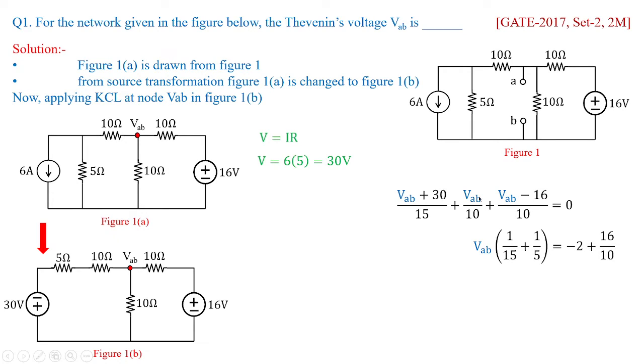On the right hand side 30 by 15 becomes minus 2 and this minus 16 by 10 on the opposite becomes 16 by 10. Now you take the proper LCM. So here on the left hand side 15 is the LCM and this cross multiply will give you the value as minus 4 by 10. Hence VAB will be equivalent to minus 1.5 volts. Now that is the right answer.